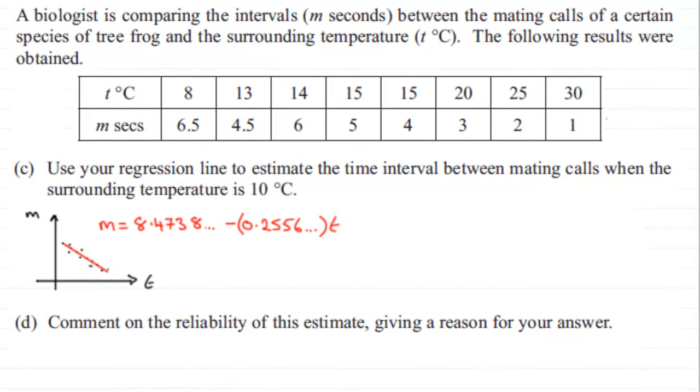Now for part C, we've got to use our regression line to estimate the time interval between mating calls when the surrounding temperature is 10 degrees Celsius.